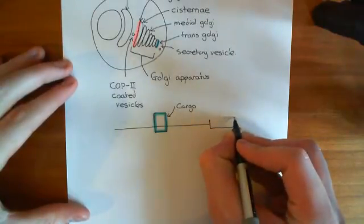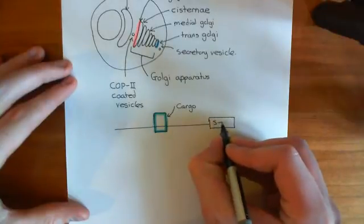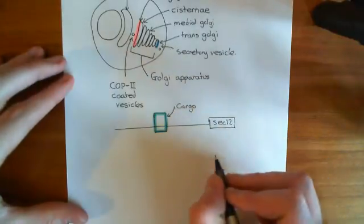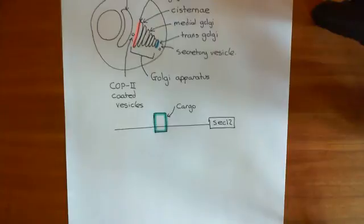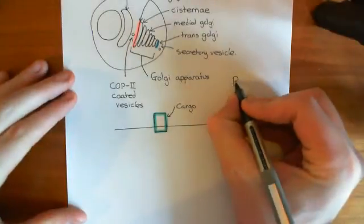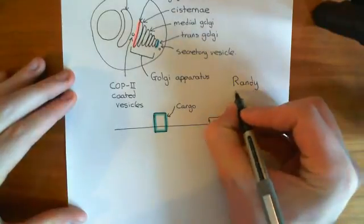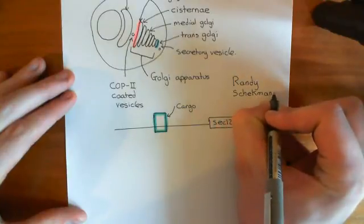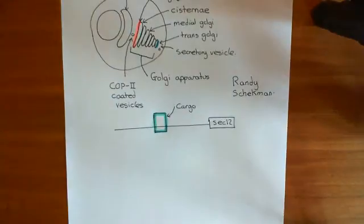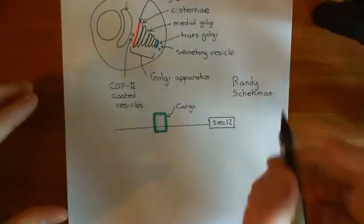In the endoplasmic reticulum membrane, there is a protein known as Sec12. A lot of the proteins in these secretory pathways are called Sec proteins. The reason is that a scientist by the name of Randy Schekman did a lot of experiments into the secretory pathways. He basically took yeast cells and applied mutagens to them — chemicals that cause DNA damage.